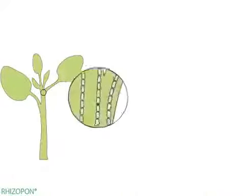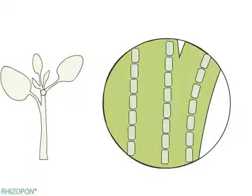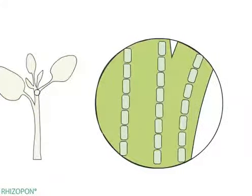Let us look inside a cutting. Natural auxins produced by the plant are translocated from the growing leaves and meristems to the basal end of the cutting.